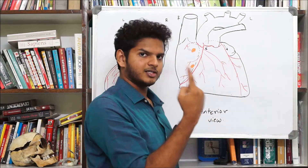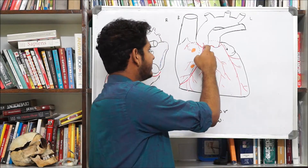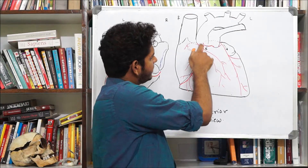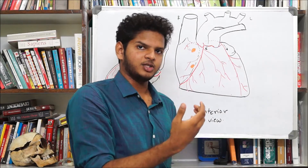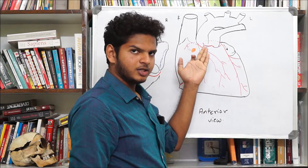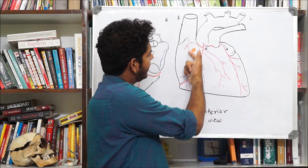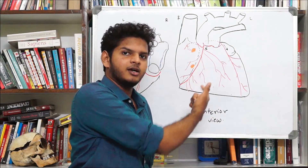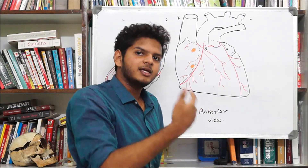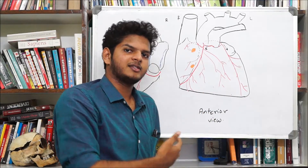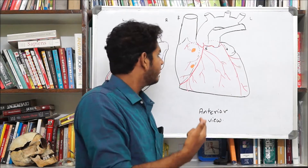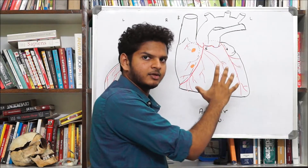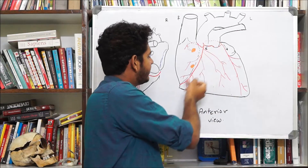The second anterior branch is the atrial branch, going posteriorly toward the right atrium. A branch from this atrial branch supplies the sinoatrial node. Always remember: in 60% of the population the SA node is supplied by the right coronary artery, and in the remaining 40% it is supplied by the left coronary artery.